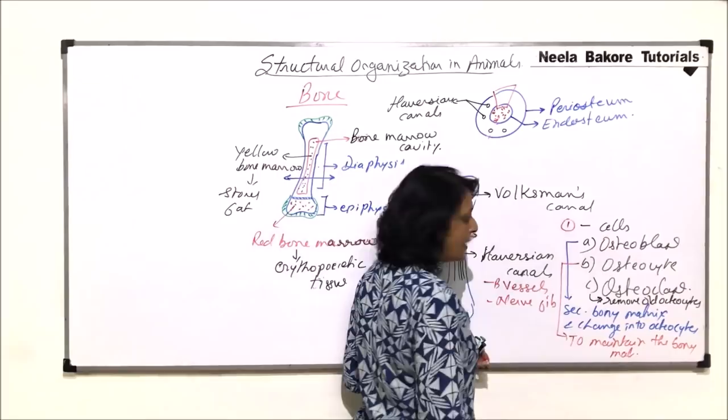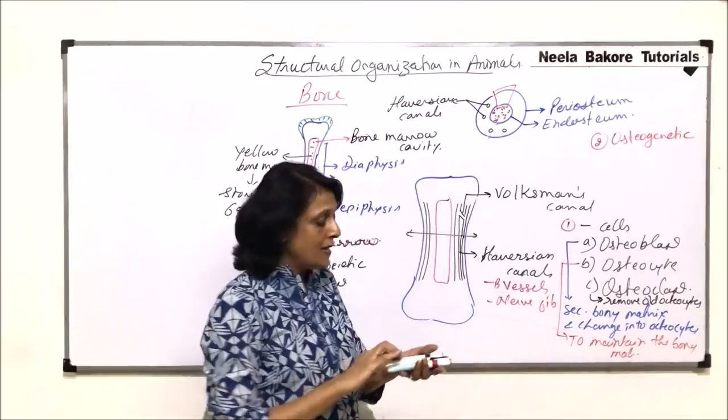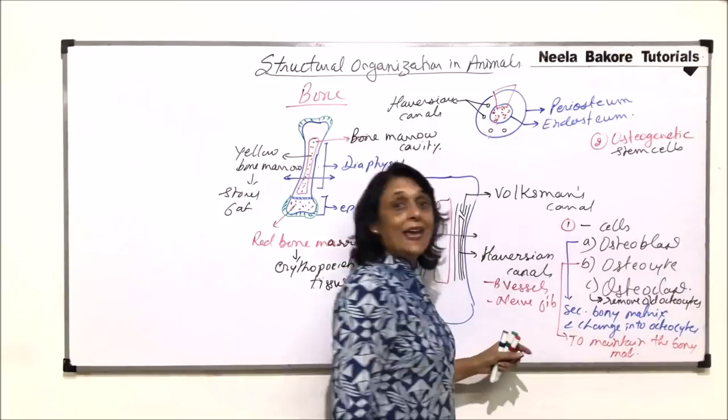This is the first category of cell. The second category are called osteogenetic cells. Osteogenetic means they are the stem cells.